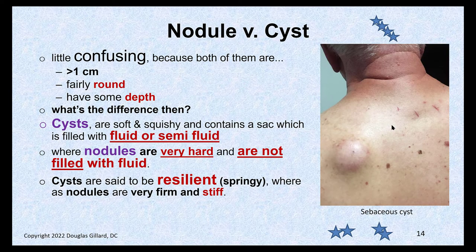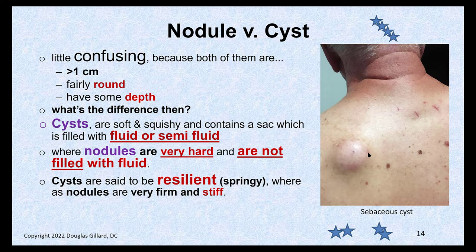How about a nodule versus a cyst? You have to be able to feel it. Is it hard as a rock or is it squishy? If it's squishy, it's a sebaceous cyst. If you've seen the pimple popper on TV, you've seen her pop these — they're filled with a fluid or semi-fluid material. The key word for cysts is 'resilient,' meaning springy and stiff. Nodules are rock hard.